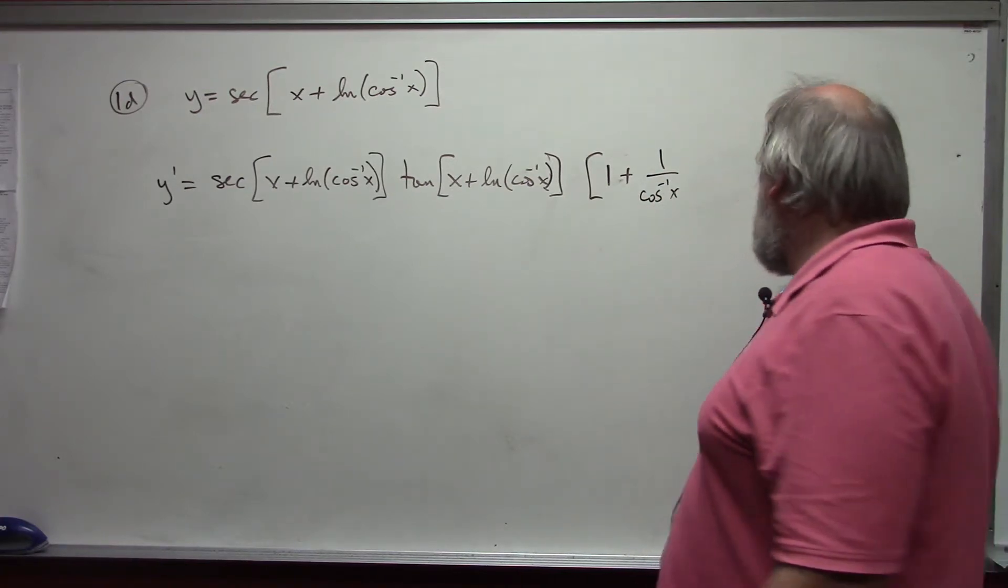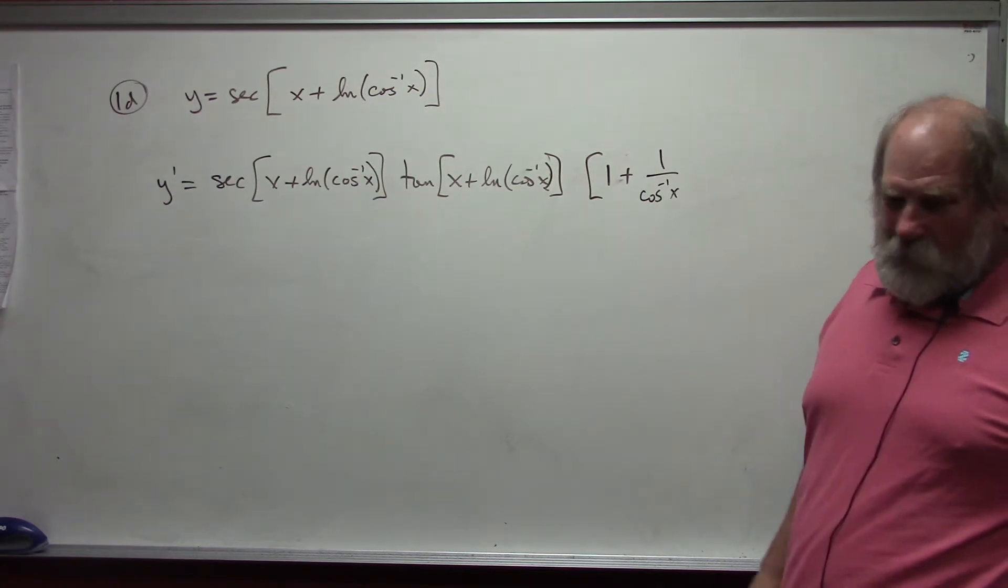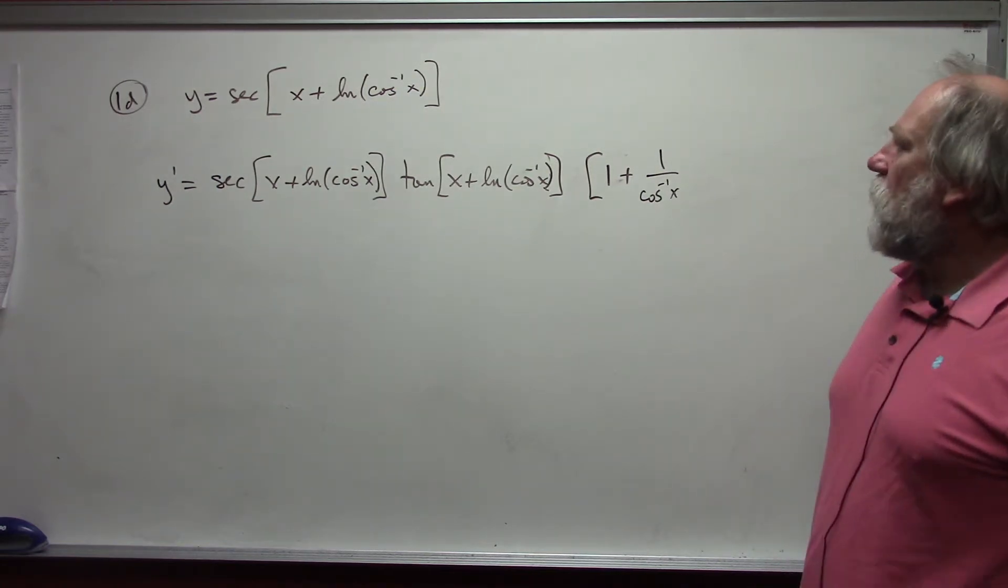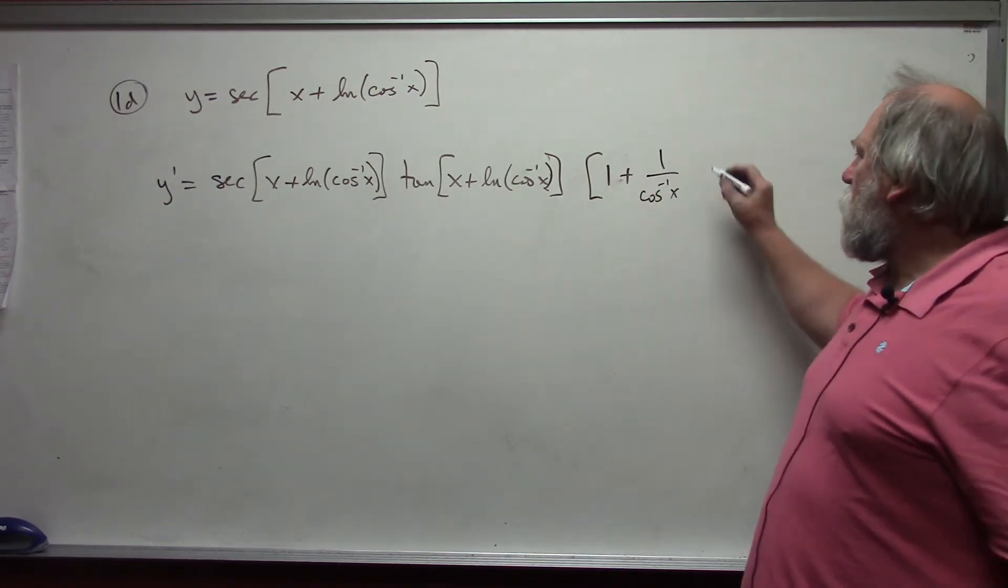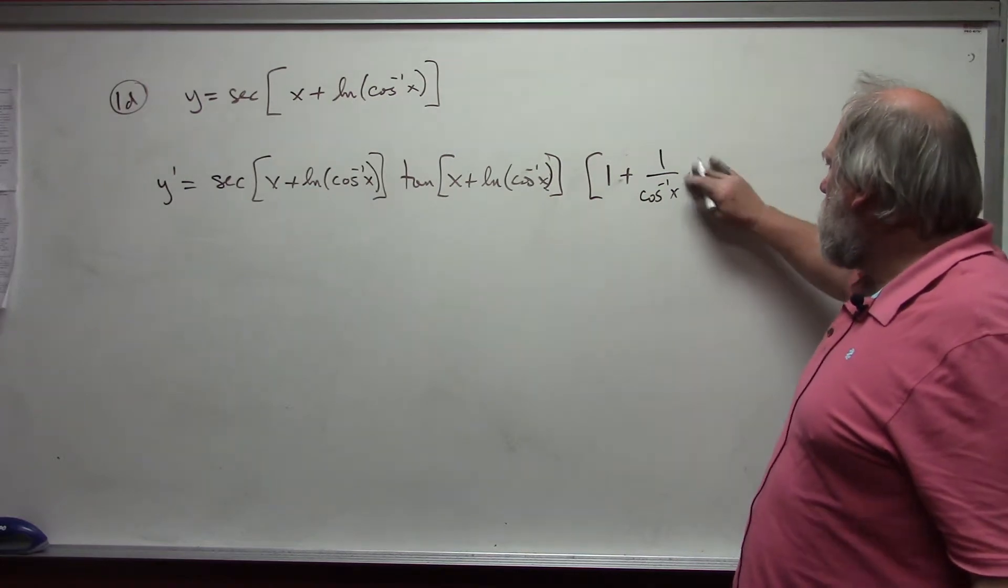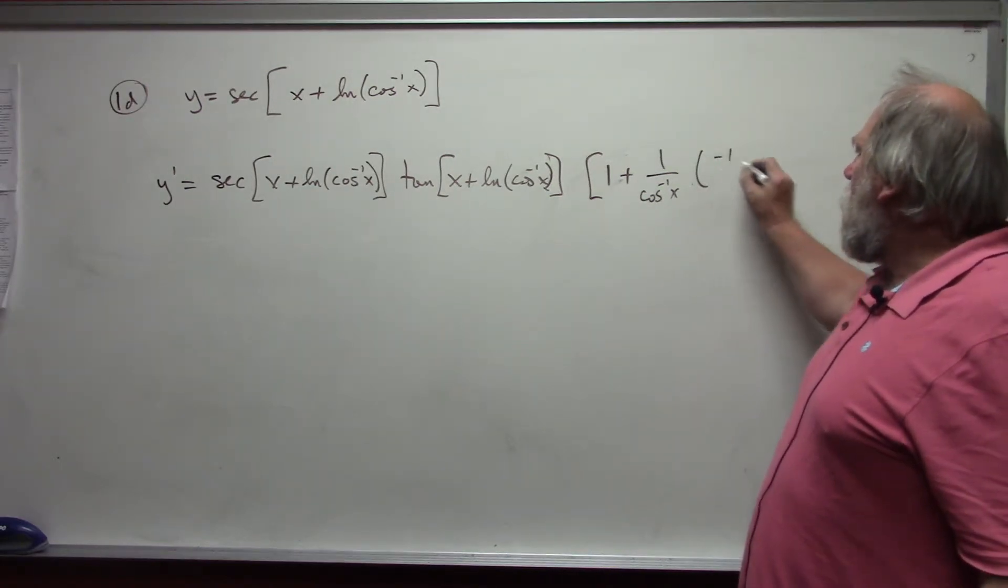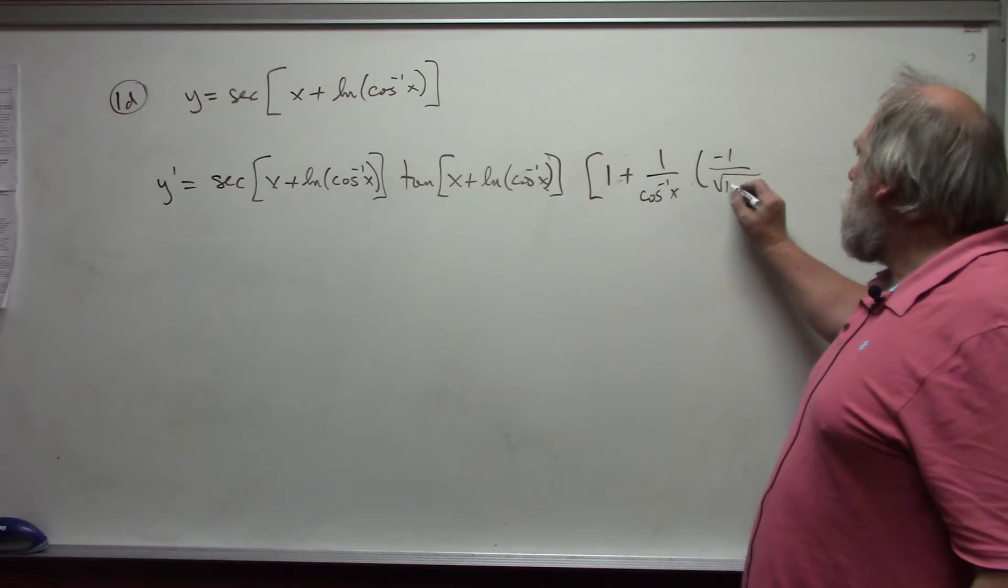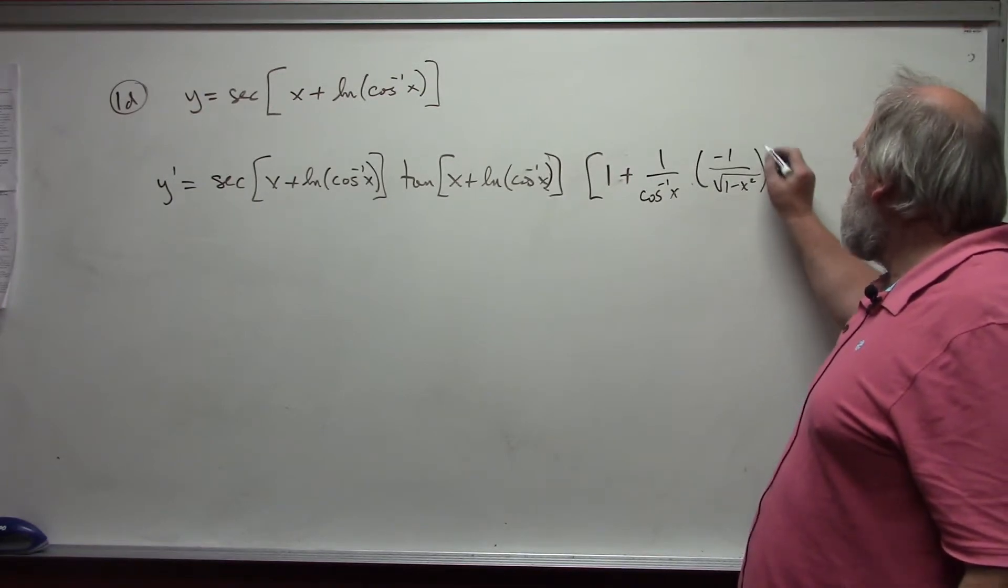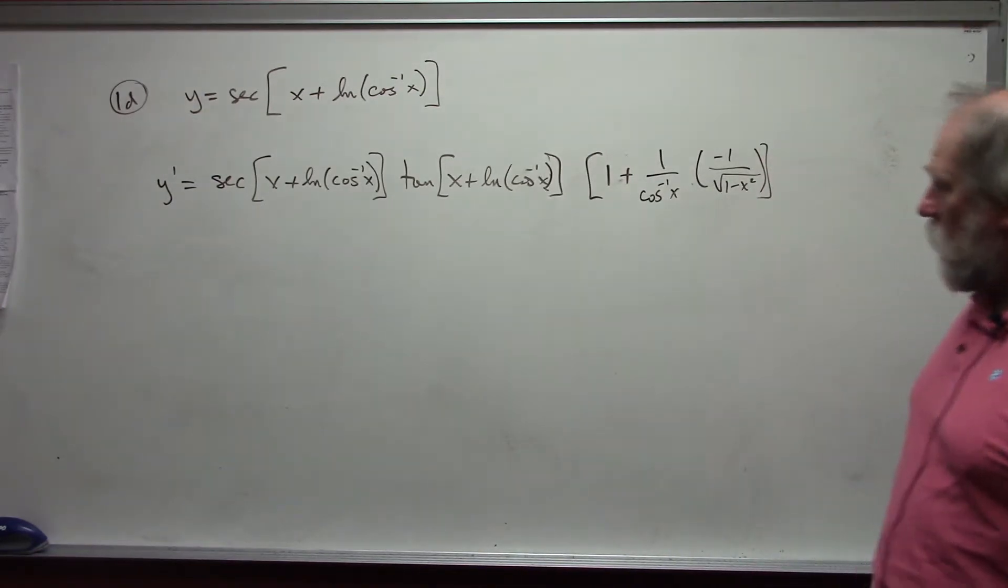Arc cosine is not the same as 1 over cosine. Times the derivative of arc cosine, which was, if you remember, negative 1 over the square root of 1 minus x squared. And so, I'm going to leave it like this. I'm not even going to bother trying to simplify it. It is a mess. But, that is the derivative that we get.